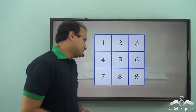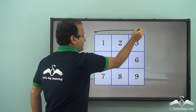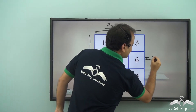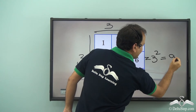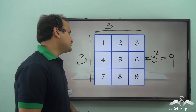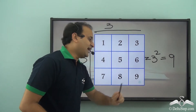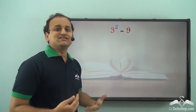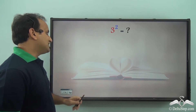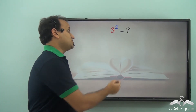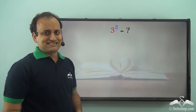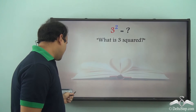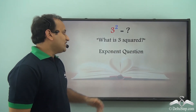Consider a cube — we have 3 × 3, which is 3² = 9. In exponential form, when 3 is multiplied by 3 we get 9. From this equation, if we remove one value as unknown — for example, remove 9 — we get the question 'What is 3 squared?' This is an exponent question.